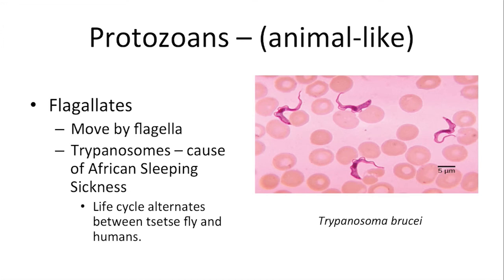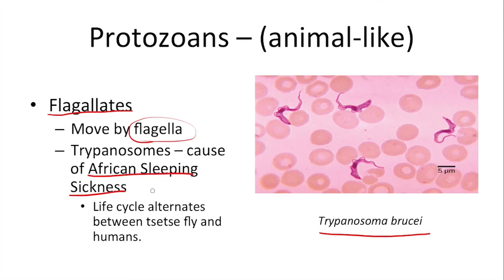The next type of protozoan — and again, these are still protists, the animal-like protists called protozoans — is the flagellates, because their movement is provided by the flagella. This particular organism shown here is a trypanosome and it is the cause of African sleeping sickness. This particular protozoan alternates its life cycle between what's called the tsetse fly in Africa and then in humans, passing back and forth between those two hosts.